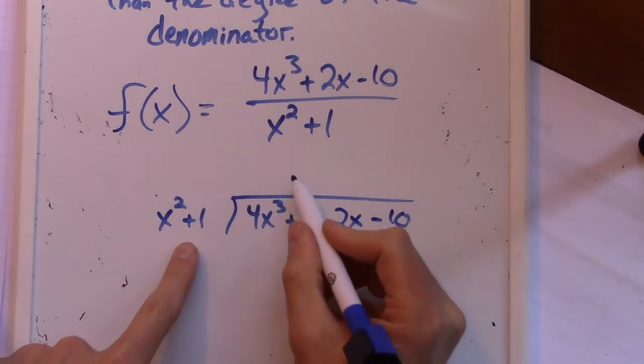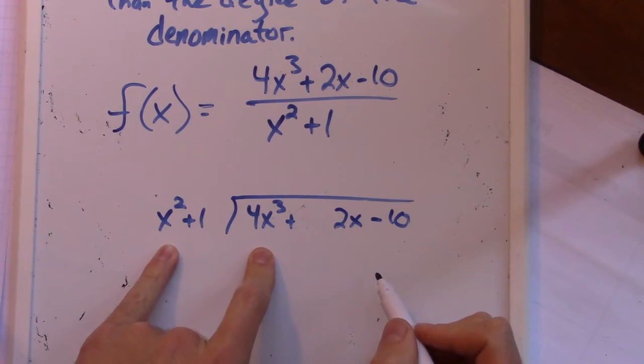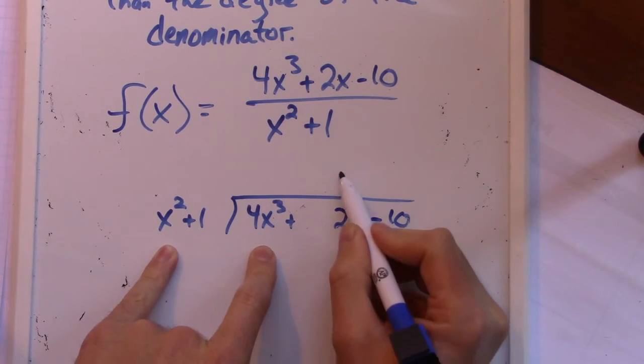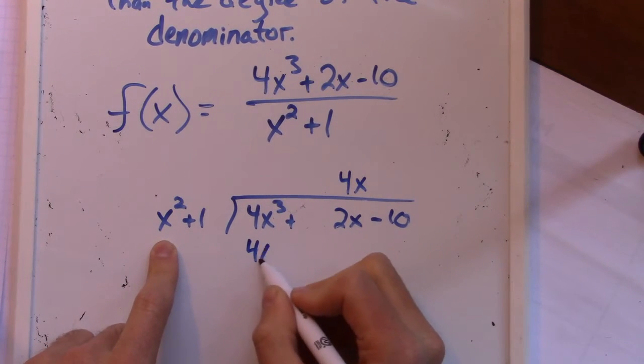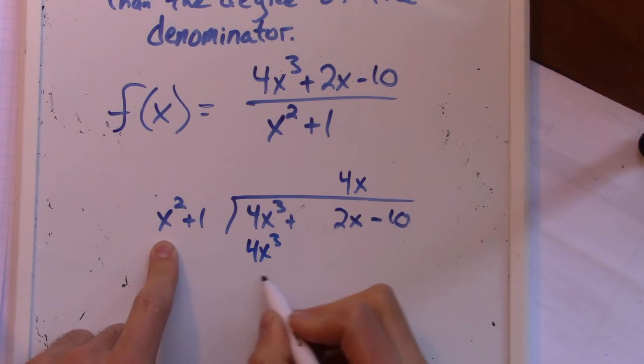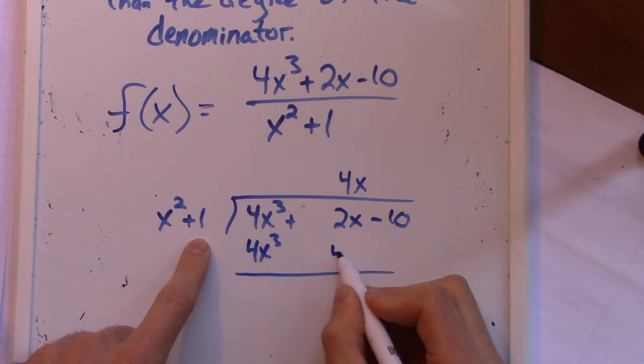So then we're gonna multiply this times this to get the bottom. We're trying to match the 4x cubed. We're gonna try to match this first term. So I've got an x squared term, so I know I can multiply times a 4x, and I'm gonna line that up with my x's here. So 4x times x squared, that's gonna be 4x cubed, right? And then 4x times 1, that's gonna be 4x, and I'm gonna line that up.